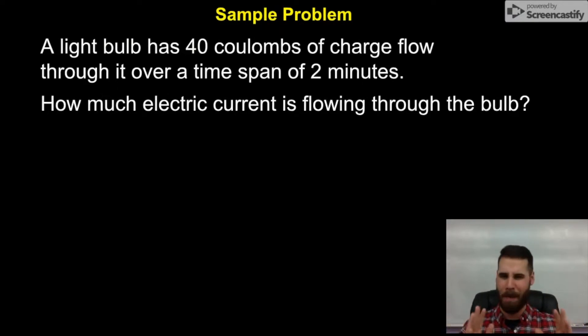So before we get to that piece of advice, here's a sample calculation just to show you basically how to use this formula that we just learned. And it says, a light bulb has 40 coulombs of charge flow through it over a time span of two minutes. How much electric current is flowing through the bulb? So let's identify the knowns and the unknowns in this question. The knowns are the charge, because they tell us that there's 40 coulombs of charge. We also know that the time is a known quantity, because they say this happens over a time span of two minutes. So we know charge, we know time.